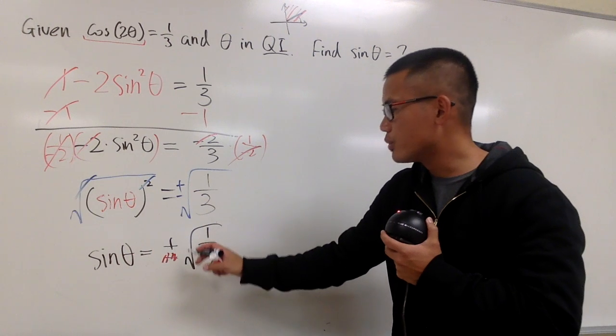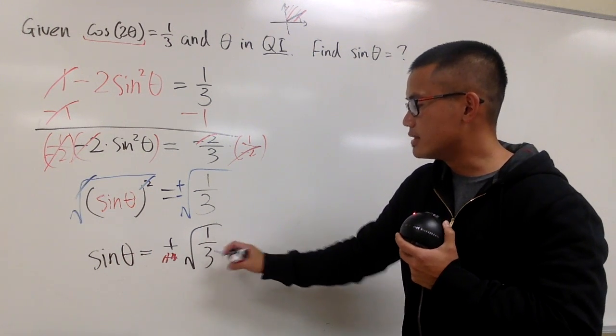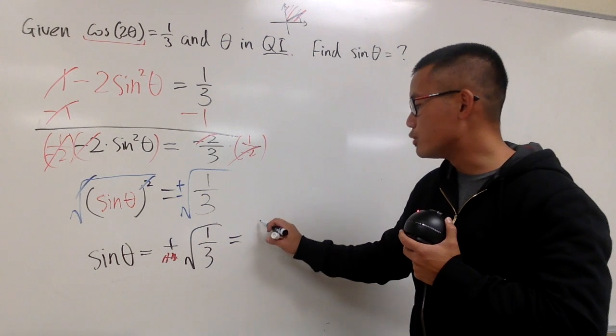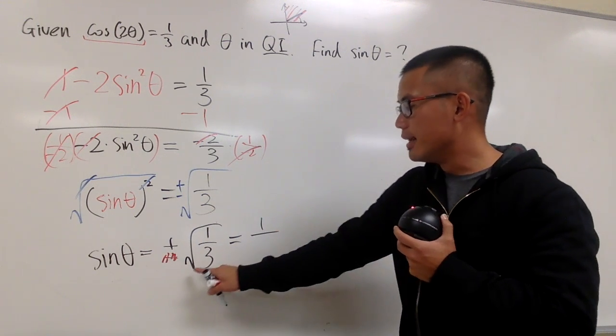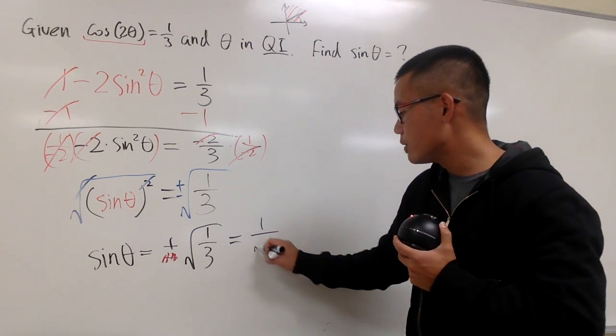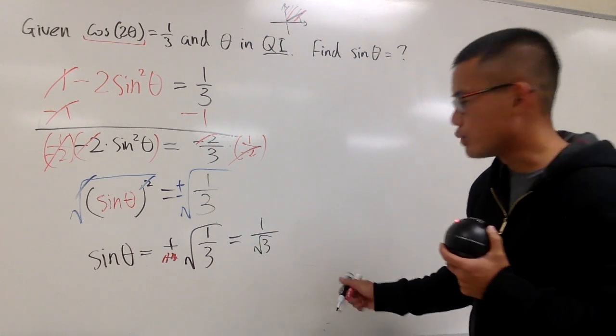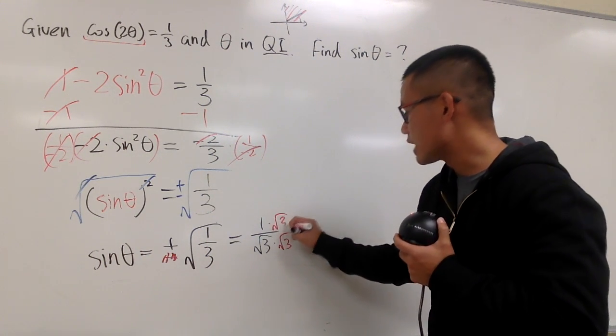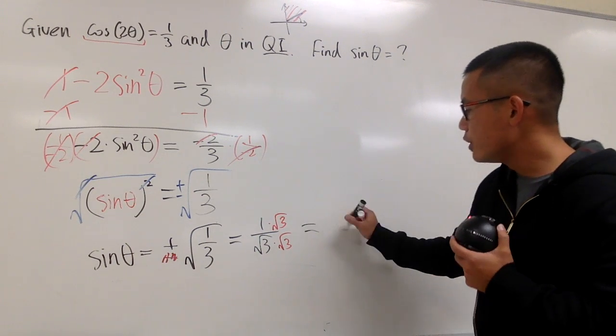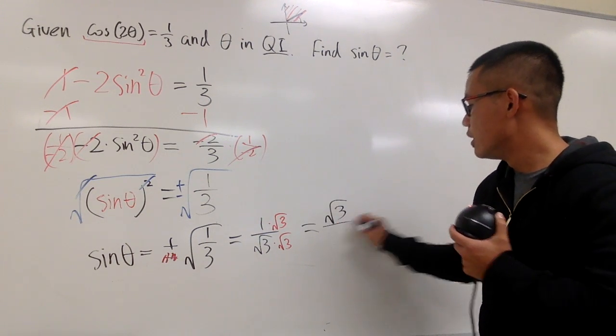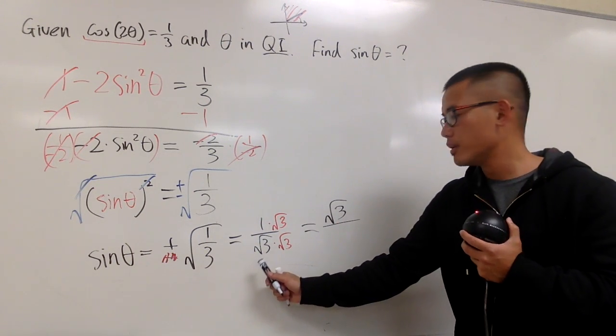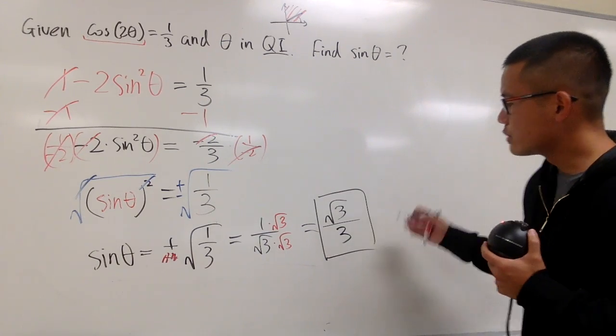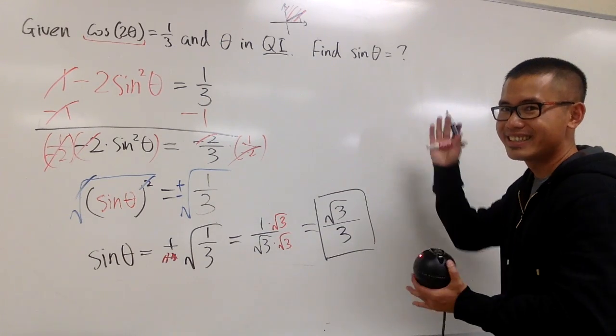That's pretty much it. Sine of theta is equal to positive square root of 1 third. And you know this is the same as saying square root of 1 on the top, which is just 1, over square root of 3 on the bottom. At the end, be sure to rationalize the denominator. So let's go ahead and multiply the bottom by square root of 3, the top by square root of 3. So on the top, you have square root of 3 over the bottom. This times that is just a regular 3. And this is it. Final answer, square root of 3 over 3. And that's it.